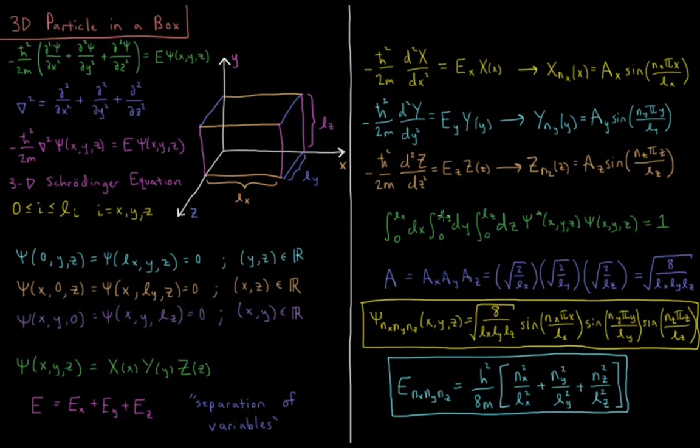Now our normalization condition is that the integral from 0 to lx, 0 to ly, 0 to lz of psi star of x, y, z times psi of x, y, z. This is now our probability density function in three dimensions.